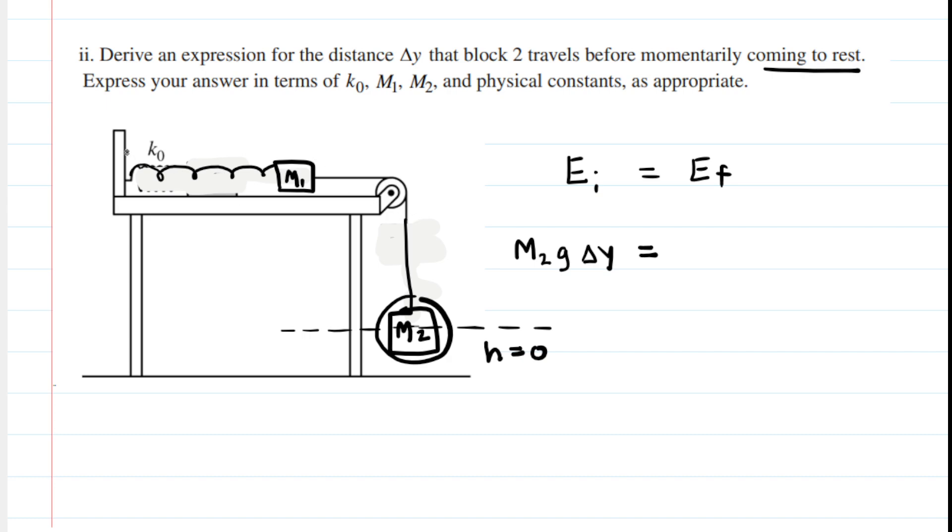But what other energy is present? Well, the spring is now stretched out. So there's definitely going to be some elastic potential energy, sometimes called the spring potential energy. And that is equal to one half multiplied by the spring constant and then multiplied by the distance that the spring has stretched. But if Block M2 has fallen a distance of delta y, then M1 has moved that same distance delta y. So that means that the spring has stretched itself by a distance of delta y. So we would have delta y squared on that side of the equation.